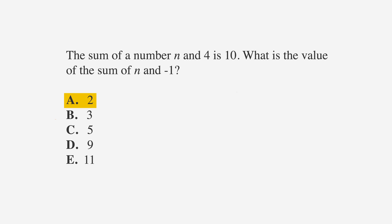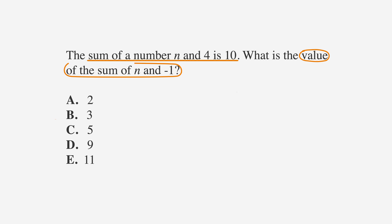The answer choices are: a is 2, b is 3, c is 5, d is 9, and e is 11. As usual, we'll underline our facts, circle the key words, and label our answer choices. We see the words 'sum,' 'number,' and 'is,' and we know we have a words-to-math problem on our hands.